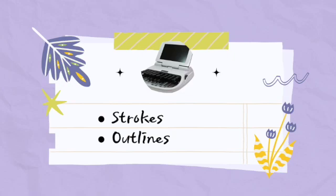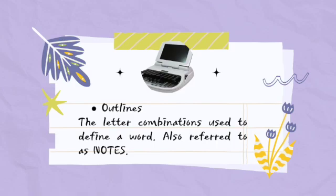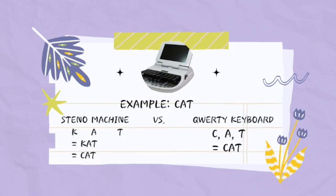When we talk of a stroke, it means any key or key combination depressed on the stenotype machine at one time. That is how we define stroke. Outlines, on the other hand, are the letter combinations used to define a word. They are also referred to as notes. So outlines can also be called notes. Let's have an example to better understand this.